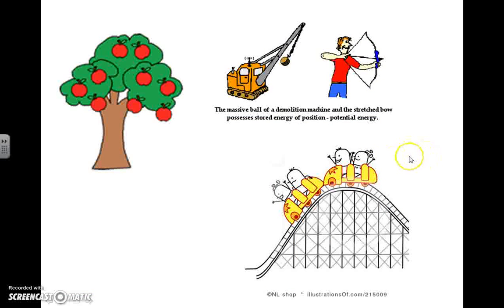I also have these images here for us to consider. You should be able to guess why I put the apple tree up here. Apples hanging on a tree are above the frame of reference, which would be the ground, and they're usually motionless, so they possess gravitational potential energy due to their mass and their height above the ground.